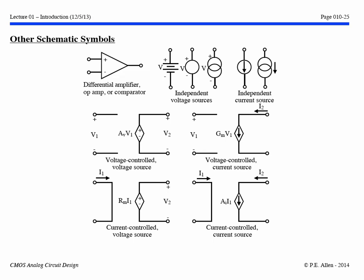Other symbols we will be using include the triangle, typically used for a differential amplifier, op amp, or comparator. Independent voltage sources are represented by circle symbols, and an independent current source by a circle with an arrow. I will typically choose one symbol for the current source and one for the voltage source. Dependent sources — voltage controlled voltage source, voltage controlled current source, current controlled voltage source, and current controlled current source — are all designated by diamonds. If you see a diamond with a plus/minus sign or a circle arrow, this represents a controlled source, as opposed to circles which represent independent sources.